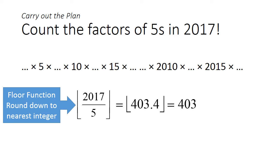2017 divided by 5 gives us 403.4 and round it down. This gives us 403, all quite doable without a calculator. So the answer is 403 trailing 0s.